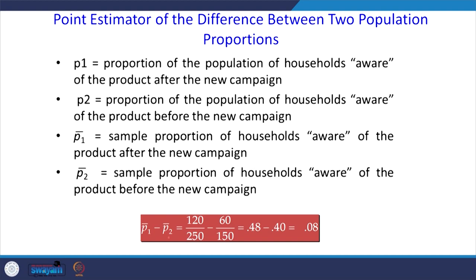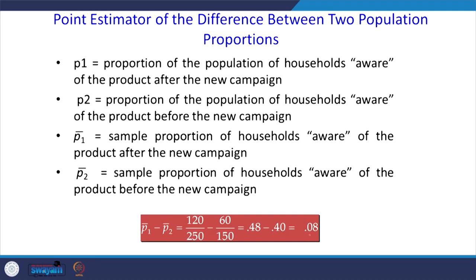p1 bar minus p2 bar: p1 bar is 120 divided by 250 because out of 250, 120 people are aware after the campaign. Before the campaign, out of 150 only 60 people are aware. So p1 bar minus p2 bar equals 8 percentage. The hypothesis focuses on testing whether there is no difference between the two population proportions.